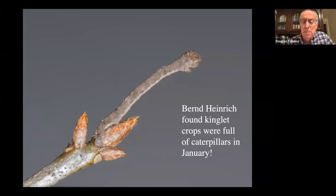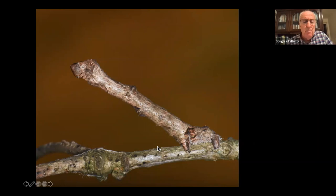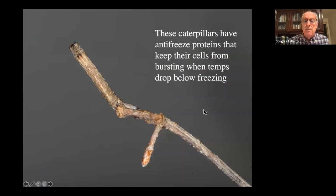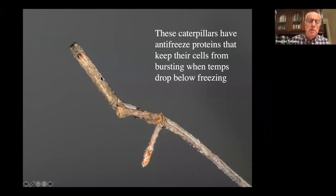I climbed one of my oak trees in November to get a vine off, and when I came down, my shirt had caterpillars all over it — so they are up there. When it gets cold, they have antifreeze proteins in their cells that keep the cells from bursting. They shrink a little when it's cold, swell when it gets warmer, and spend the entire winter just sitting there.